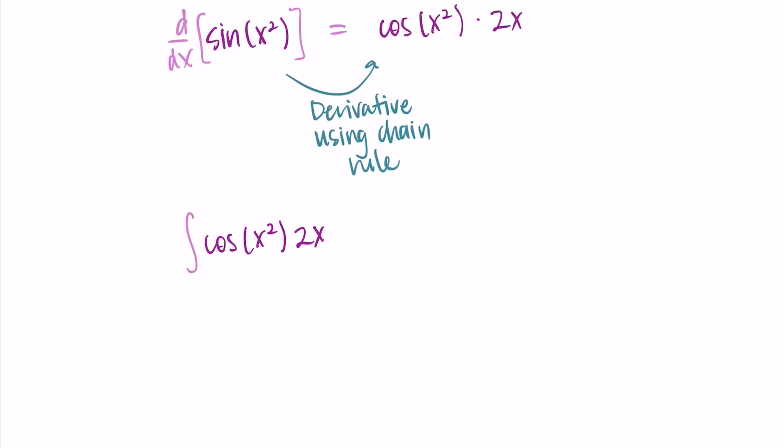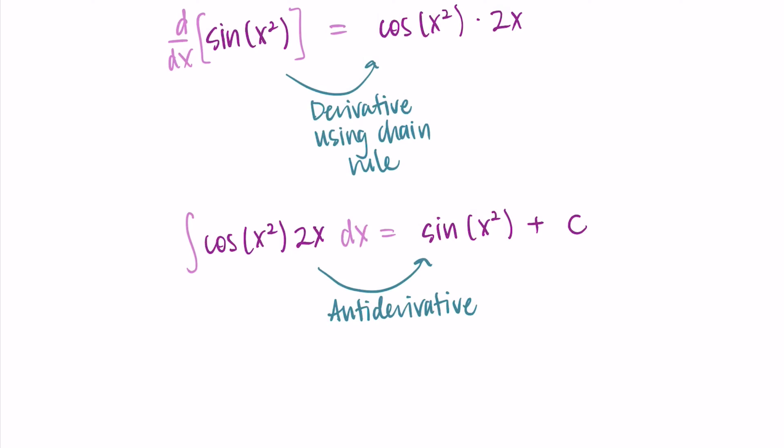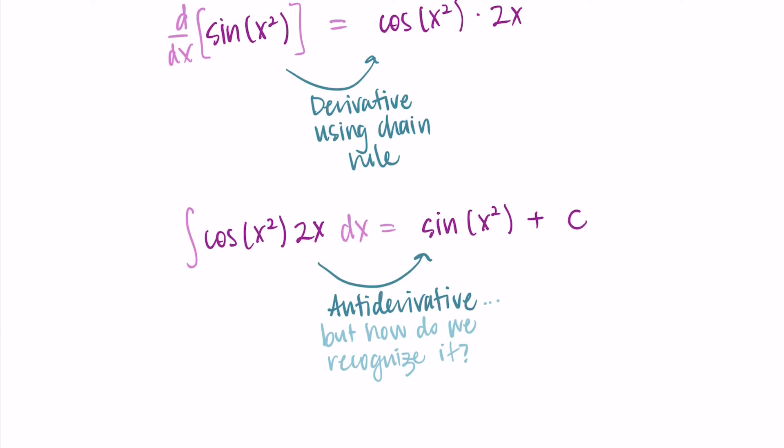If I ask you to find the integral of cosine of x squared times 2x with respect to x, you would say finding the integral is equivalent to finding the antiderivative. The antiderivative is just a function whose derivative is this integrand, cosine x squared times 2x. I know that it's sine of x squared, and I put my plus c on there to represent a general antiderivative. We could check: when we take the derivative of sine x squared plus c, we get the integrand. However, we only knew this because I just told you to take the derivative first. So how do we recognize this in cases where we don't automatically see what the antiderivative is?